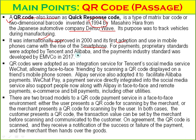For payments, preparatory standards were adopted by Tencent and Alibaba in the early days. The payment industry standard was developed by EMVCO in 2017. QR codes were adopted as an integration of service for Tencent's social media service WeChat, allowing face-to-face friending by scanning a QR code displayed on a friend's mobile screen. Alipay service also adapted it to facilitate Alibaba payments.